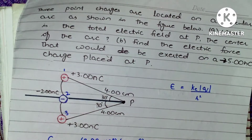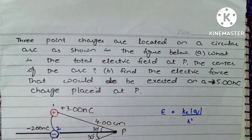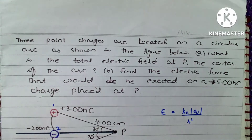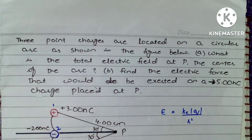Dear students, I hope you all are doing well. The question for today's video is: three point charges are located on a circular arc as shown in the figure below. The first part is what is the total electric field at P, the center of the arc. The second part is find the electric force that would be exerted on a negative 5 nanocoulomb charge placed at P.